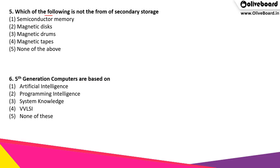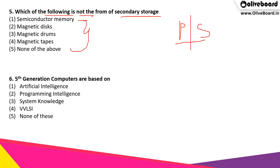Which of the following is not a form of secondary storage? We know there is primary storage and there is secondary storage. Out of the following options, which is not a secondary storage? The correct answer is option 1, semiconductor memory — that is a primary memory and not a secondary storage.